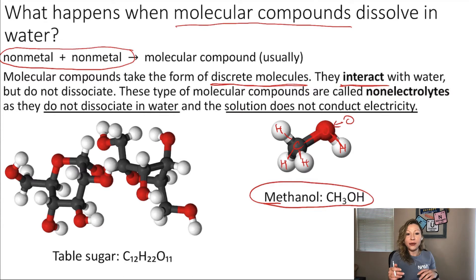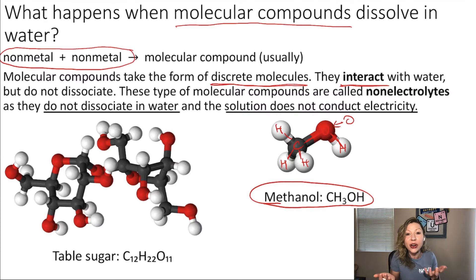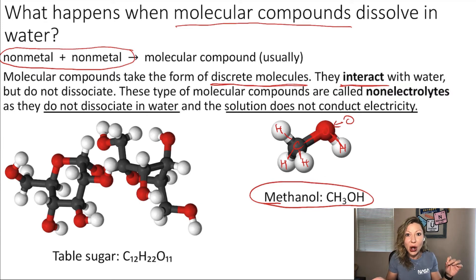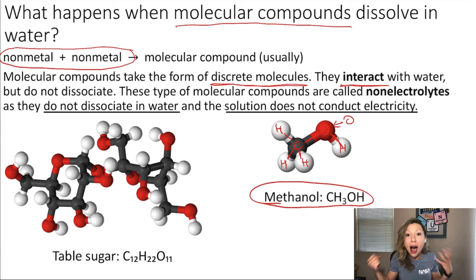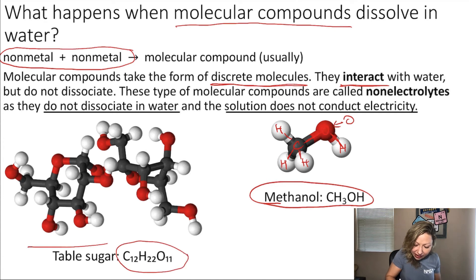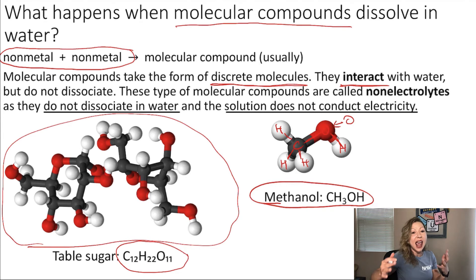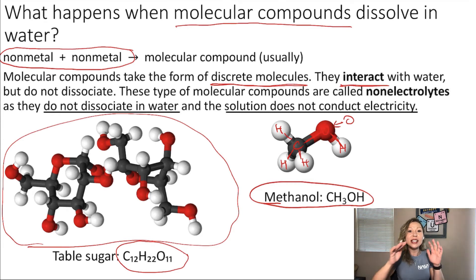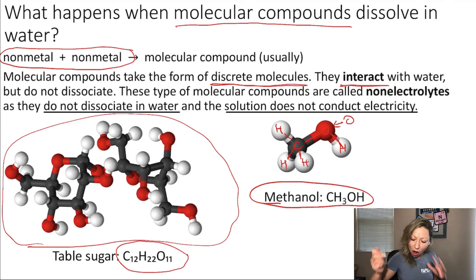For example, if you take table salt and table sugar from your kitchen, you'll see they both dissolve in water similarly. But the real difference is that table salt, sodium chloride, will dissociate as an electrolyte and fall apart into ions. Table sugar is actually a molecular compound consisting of carbon, hydrogen, and oxygen atoms, and it will not dissociate. As a result, the solution will not conduct electricity, and these molecular compounds are called non-electrolytes.